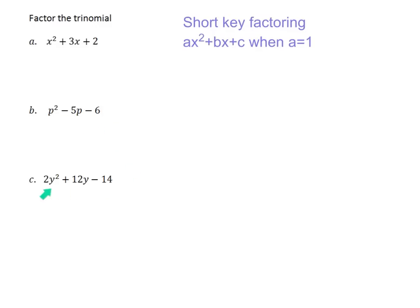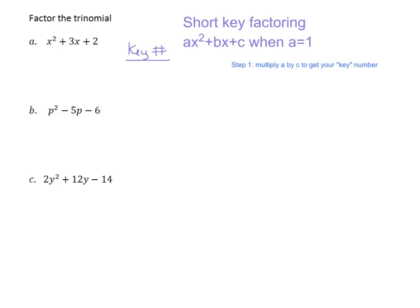We'll get to the third one down here because it doesn't look like it's in this form — it looks like a might be 2 — but we'll get there. So let's start with example a. To factor a quadratic like this, we're going to learn a process called short key factoring. How we do short key factoring is you multiply the number out in front — which is always going to be 1 in this case — by the number at the back, which is 2. So our key number for this one is going to be 2.